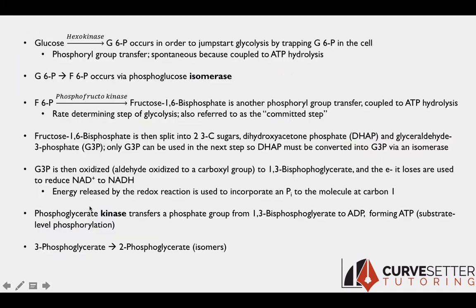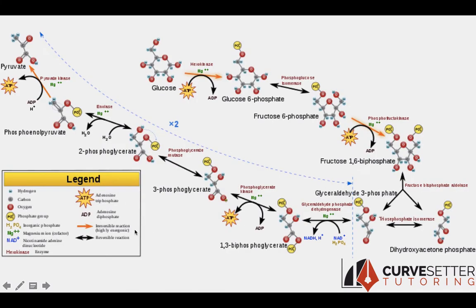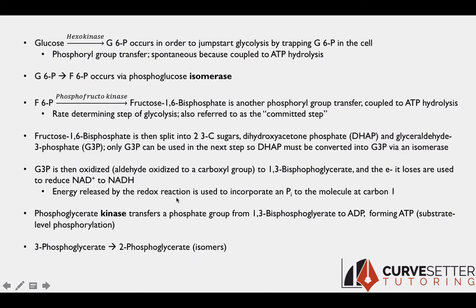In the next step, phosphoglycerate kinase — remember, kinase adds phosphate groups — transfers the phosphate group from this molecule to ADP, forming ATP. The phosphate group we incorporated is immediately used to phosphorylate ADP, forming our energy molecule. This formation of ATP is called substrate-level phosphorylation.